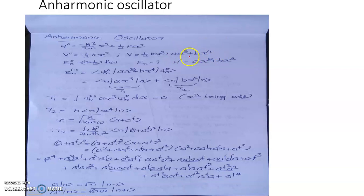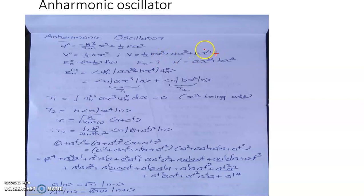But in a more accurate case, or in situations where we need more accurate results, we cannot neglect these higher order terms. The actual potential to which the oscillator is subjected is then given by half k x squared plus a x cubed plus b x to the fourth, and so on. An oscillator whose potential includes these higher order terms beyond the quadratic is referred to as an anharmonic oscillator.